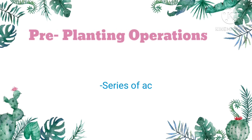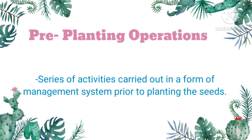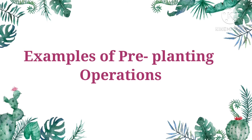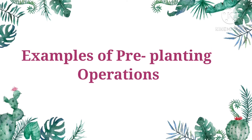Pre-planting operations are a series of activities carried out in the form of a management system prior to planting the seeds or planting materials. It means these are operations you carry out before sowing the seeds. Pre-planting operations are very important. They are the foundation on which you build the success and survival of the crop. In this module, we will discuss six examples of pre-planting operations.